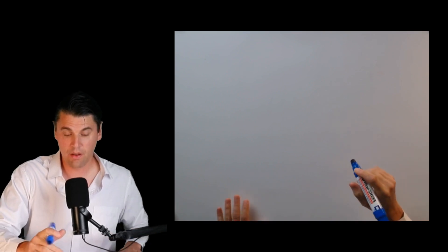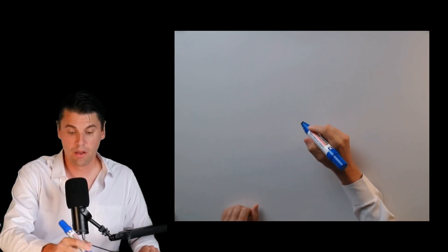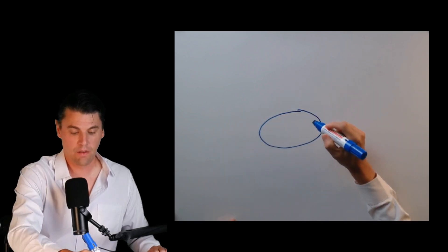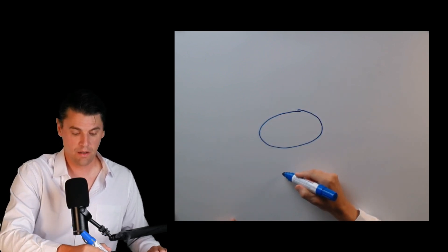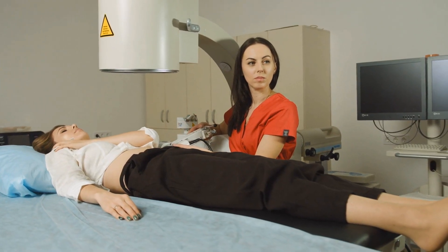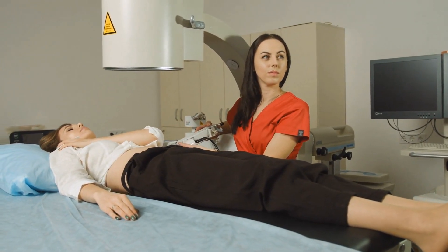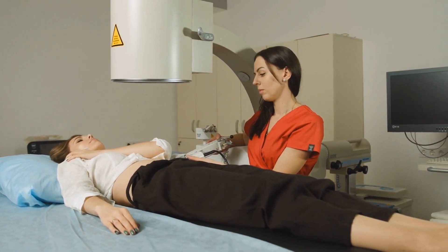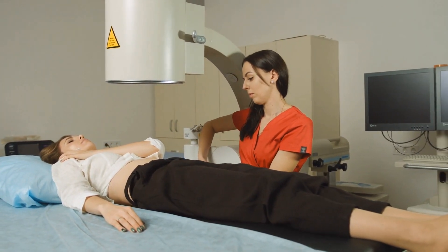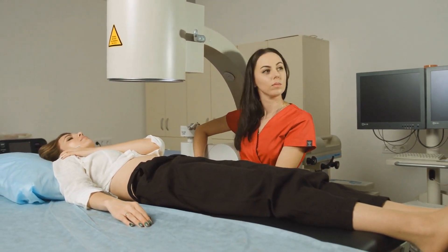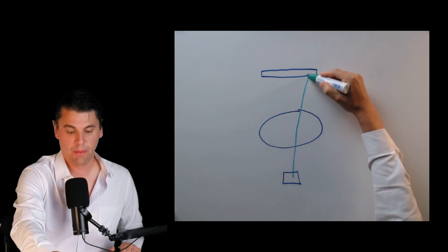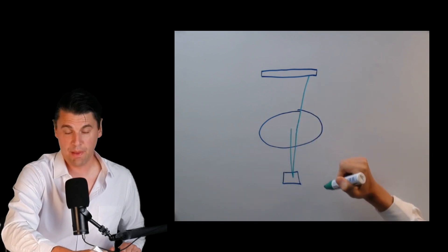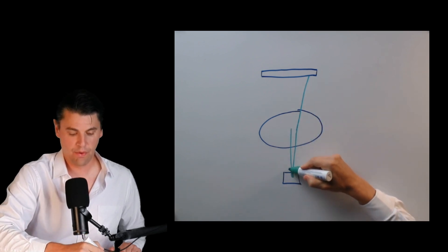Let's start off by thinking about an interventional setting. In this interventional setting, you'll have your patient here. You'll have your x-ray tube here. You'll have your detector, flat panel detector, or an image intensifier up here. You'll have x-rays coming in. Those x-rays are either going to pass all the way through the patient. Some of the x-rays will stop in the patient due to photoelectric effect.